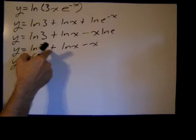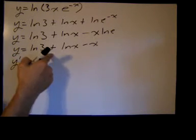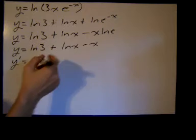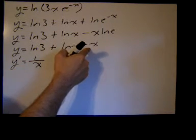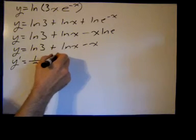The derivative of the natural log of 3 is 0. That's a constant. Plus the derivative of the natural log of x, which is 1 over x, minus the derivative of x is 1.